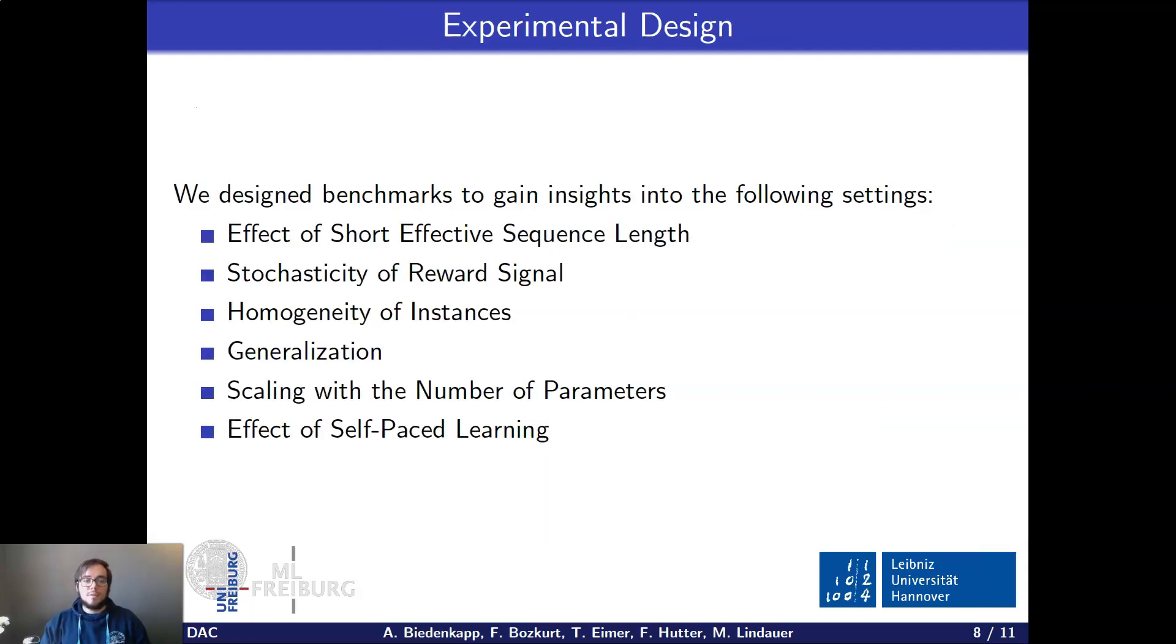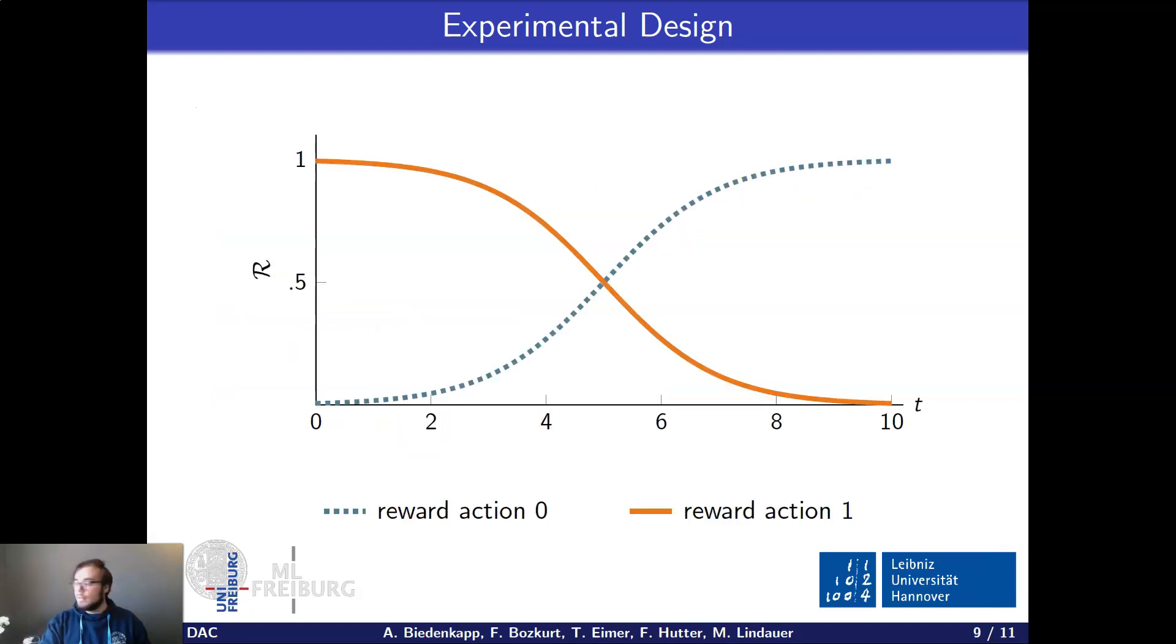To evaluate our framework, we designed benchmarks that allowed us to gain insights into a variety of settings. And there are many settings that we looked at, but out of time constraints, I'm only going to talk about these two because I think they nicely drive home the fact that we're actually learning to configure per time step and to adjust to the instance at hand. For that, we designed the sigmoid benchmark here, the configurator has to more or less approximate a sigmoid function when it has very limited action space. So in this example, it has to approximate a sigmoid function when it has only two actions.